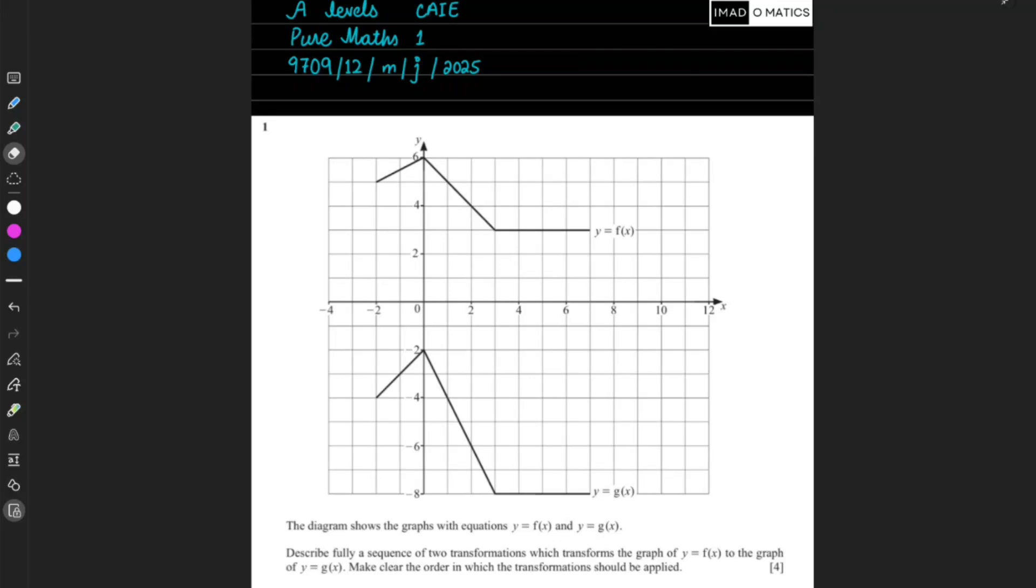This is about transformations. The diagram shows the graphs with equations y equals f of x (this graph) and y equals g of x (this graph). Describe the sequence of two transformations which transform y equals f of x to y equals g of x.